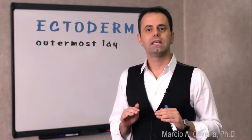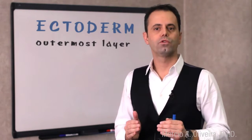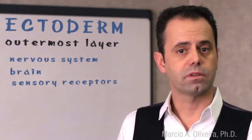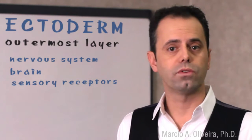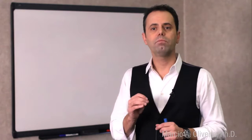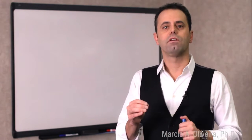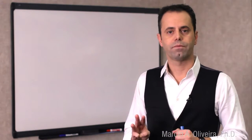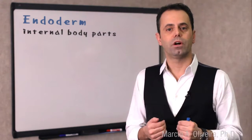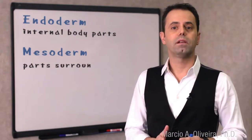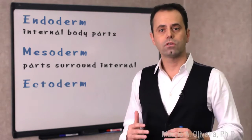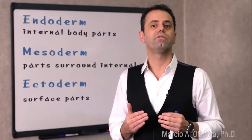The ectoderm is the outermost layer which will become the nervous system and brain, the sensory receptors like our ears, nose, and eyes, and skin parts like hair and nails. Every body part eventually develops from these three layers: the endoderm primarily produces internal body parts, the mesoderm primarily produces parts that surround the internal areas, and the ectoderm primarily produces the surface parts.